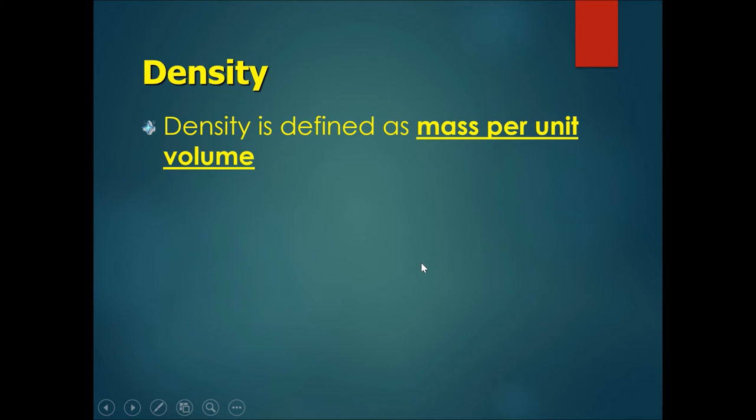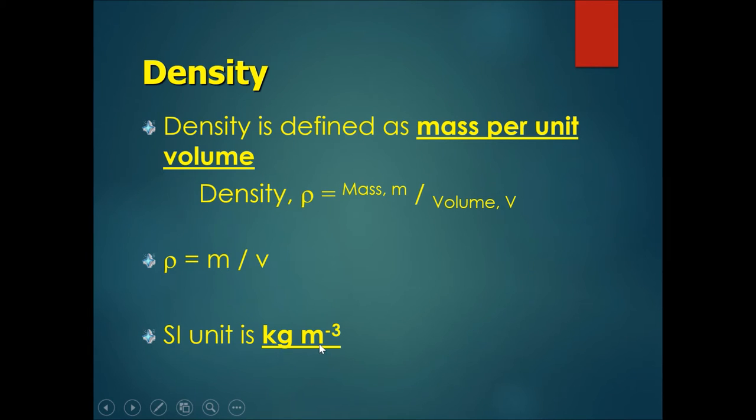Density is defined as mass per unit volume. The formula would be density equals mass divided by volume. Or simplified, rho (ρ) is equal to mass over volume. Yes, this thing that looks like a p is actually called a rho. The SI unit is kg per meter cube.